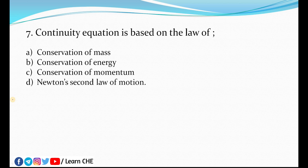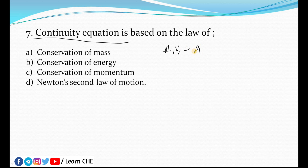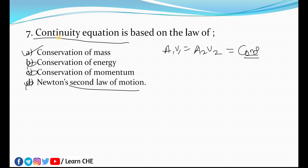The seventh question: the continuity equation is based on the law of? The formula of the continuity equation is A₁V₁ = A₂V₂ = constant, for flow through any pipe. The answer is conservation of mass — not conservation of energy, not conservation of momentum, and not Newton's second law of motion.